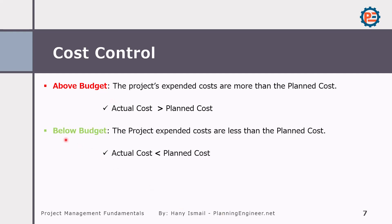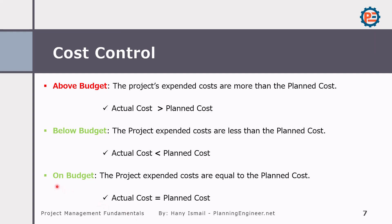The second scenario: we can be below budget, which is what we always want — the project's actual costs are less than the planned cost. And there is a rare scenario where we are on budget, where the actual cost is equal to the planned cost. So now we know the key terms of cost control.